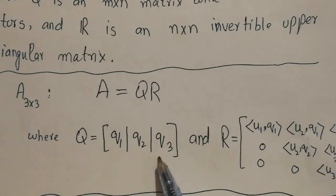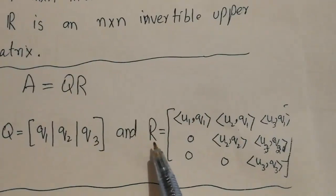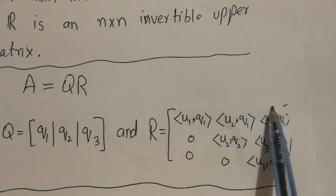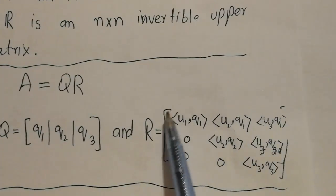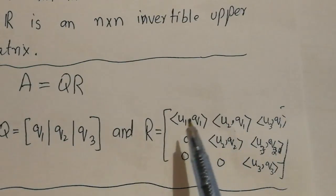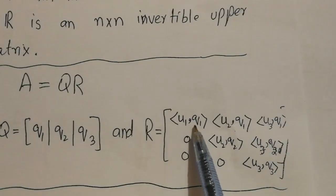Matrix R can be written in a specific form. The first entry is the dot product between U1 and Q1, where U1 is the first column of A and Q1 is the first column of Q. Their dot product is a number placed in that position. Similarly, we write the dot product of U2 with Q1 in the next position.